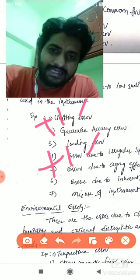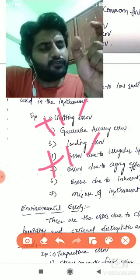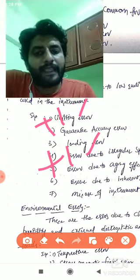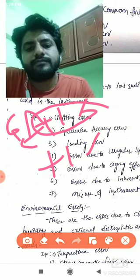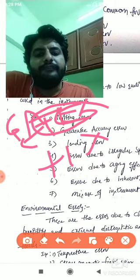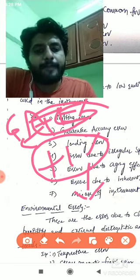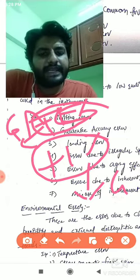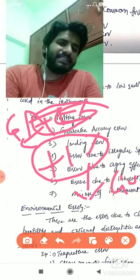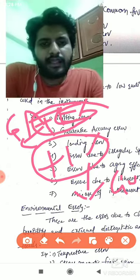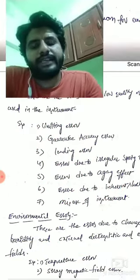Percentage of accuracy can be expressed in two ways: by the full scale itself, or by the particular measurement value itself. If you express it with respect to the full scale, we call it guaranteed accuracy error. If you express percentage accuracy at a particular measured value, we call it limiting error.